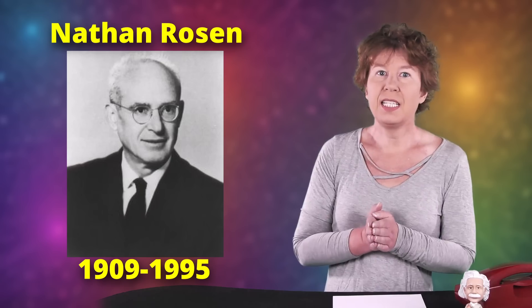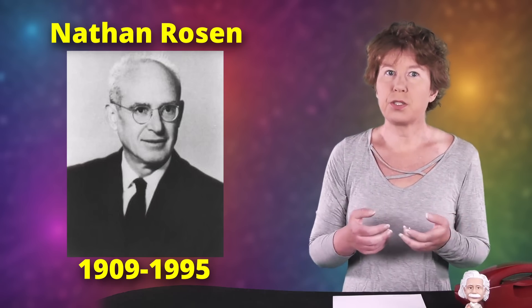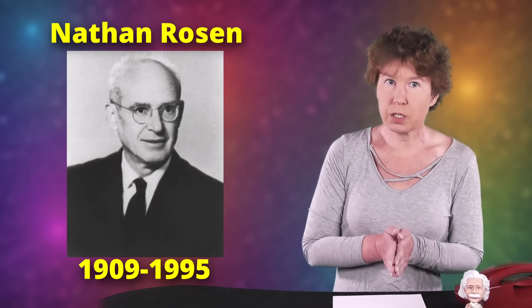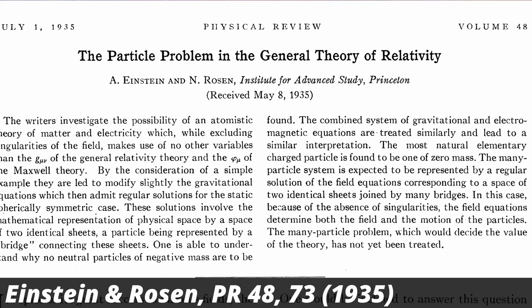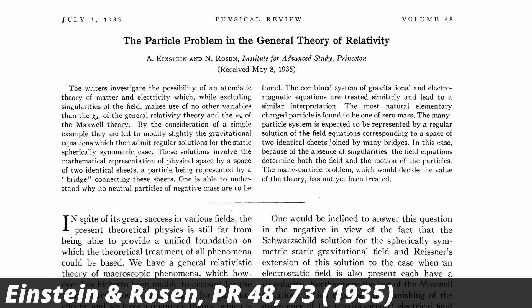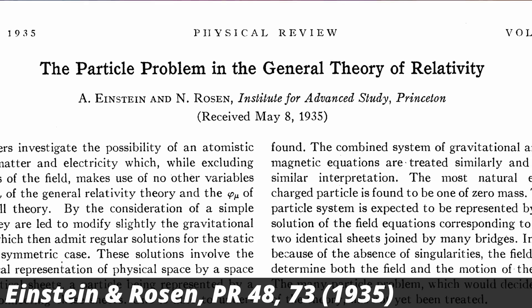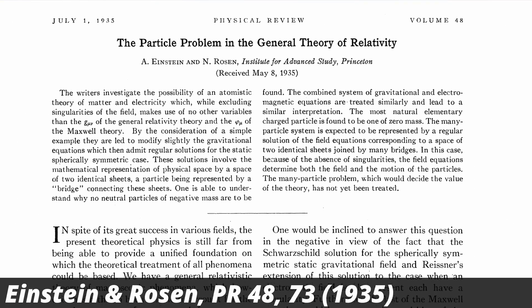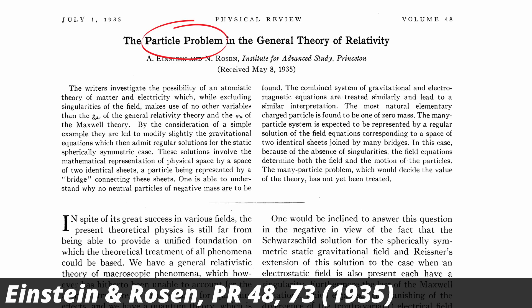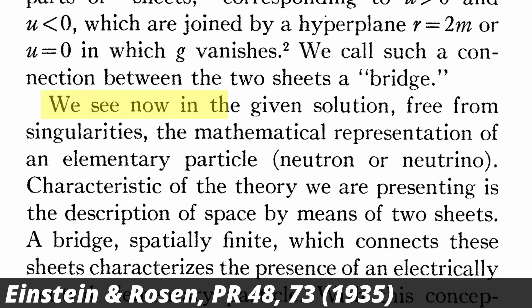Back to Einstein. That Einstein wanted to get rid of black hole singularities is what led to his famous paper with Nathan Rosen in 1935, in which they introduced what's now called an Einstein-Rosen bridge. What they did was to take away the inside of the black hole and instead connect two universes — it's the simplest known example of a wormhole. But they didn't write the paper to introduce wormholes. Einstein and Rosen thought these wormholes were elementary particles. After constructing their bridge in the paper, they write very clearly: 'We see now in the given solution, free from singularities, the mathematical description of an elementary particle, neutrons or neutrinos.'